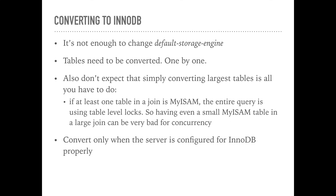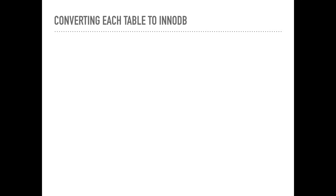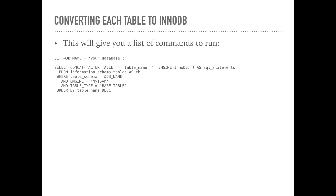I recommend that you hold off with conversion for now, until you understand InnoDB configuration better. But when you're ready, you can run the following query to get a list of ALTER TABLE statements that will convert all tables in a given schema from MyISAM to InnoDB. Many applications are using MyISAM explicitly — during database initialization, CREATE TABLE statements often have ENGINE=MyISAM set at the end, so tables are created as MyISAM regardless of your default storage engine setting. It's a good idea to check for any MyISAM tables every now and then.